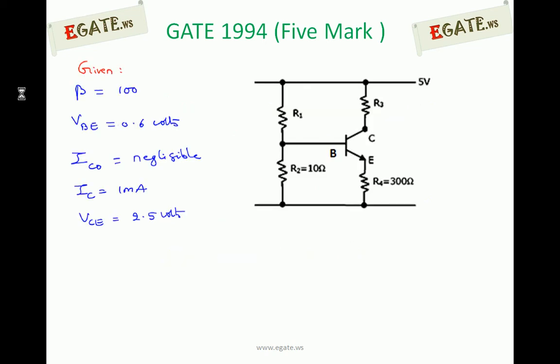These are the given values and this is the diagram given. If you look at this diagram, R3 is in the collector-emitter loop, which we can directly calculate since we know the value of IC and VCE and also beta value.